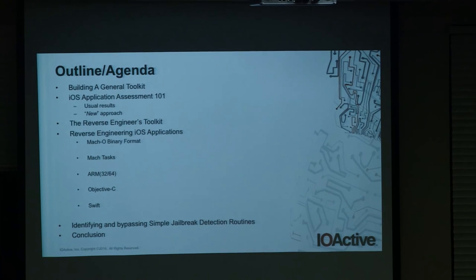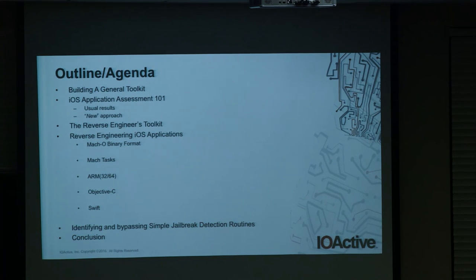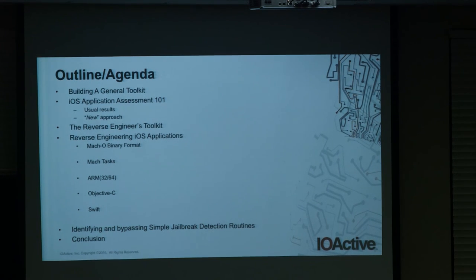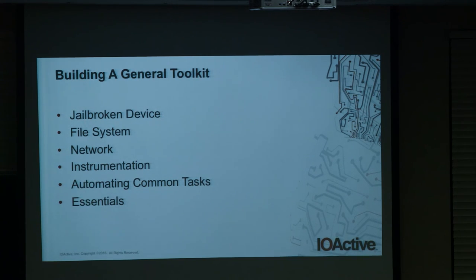The approach we will take is to first look at the common toolkit, then look at the tests you would perform using those tools, the results they produce, and the issues you will run into. When we get into those issues, we'll see how we can move beyond or work around them — and that's the main point of the talk. The general toolkit includes a jailbroken device, tools for manipulating the file system, tools for intercepting network traffic, instrumentation, and so on.